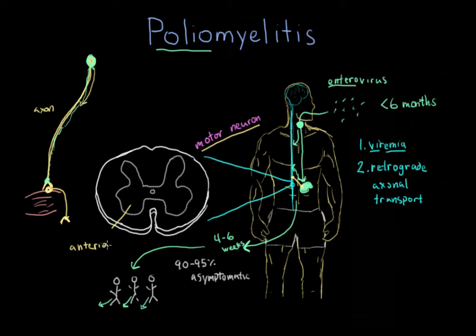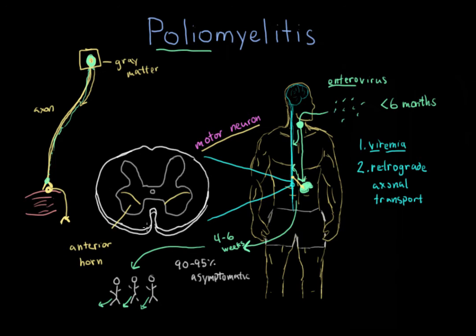Anterior means in the front, and horn refers to the shape. These are the cells in the front of the spinal cord. The outlined region is the gray matter, where the cell bodies are. The white surrounding area, known as white matter, is composed of axons. The cell bodies of the anterior horn happen to be the motor neurons of the body that are affected by the poliovirus.